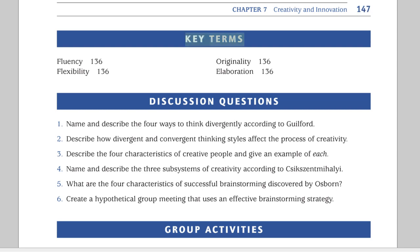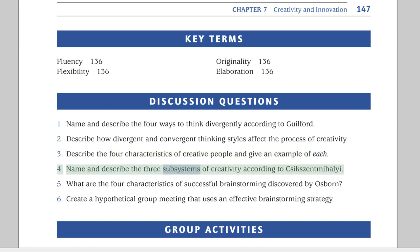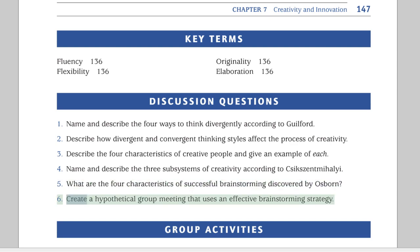Key Terms: Fluency (p.136), Flexibility (p.136), Originality (p.136), Elaboration (p.136). Discussion Questions: 1. Name and describe the four ways to think divergently according to Guilford. 2. Describe how divergent and convergent thinking styles affect the process of creativity. 3. Describe the four characteristics of creative people and give an example of each. 4. Name and describe the three subsystems of creativity according to Csikszentmihalyi. 5. What are the four characteristics of successful brainstorming discovered by Osborne? 6. Create a hypothetical group meeting that uses an effective brainstorming strategy.